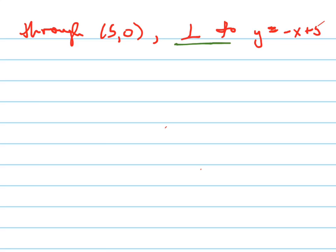If it's perpendicular to this line, that means the slope is the negative reciprocal of this line right here. And what's the slope of this line? Negative 1.